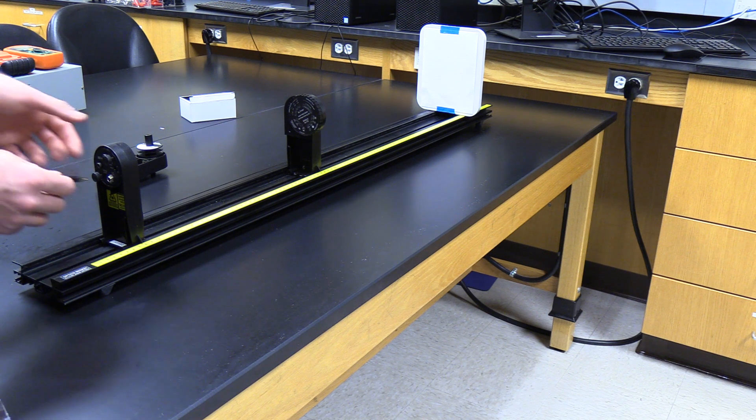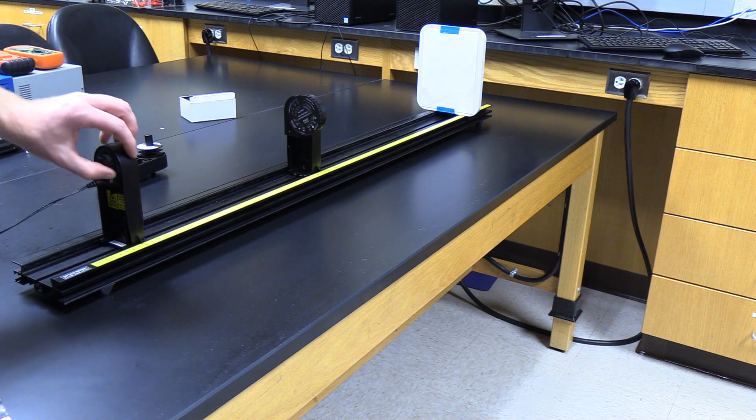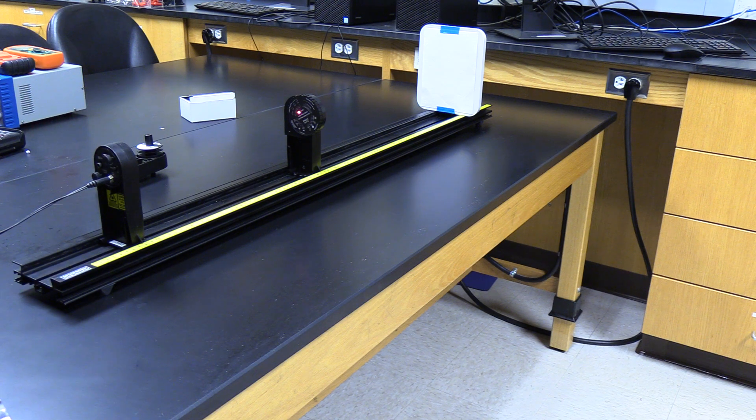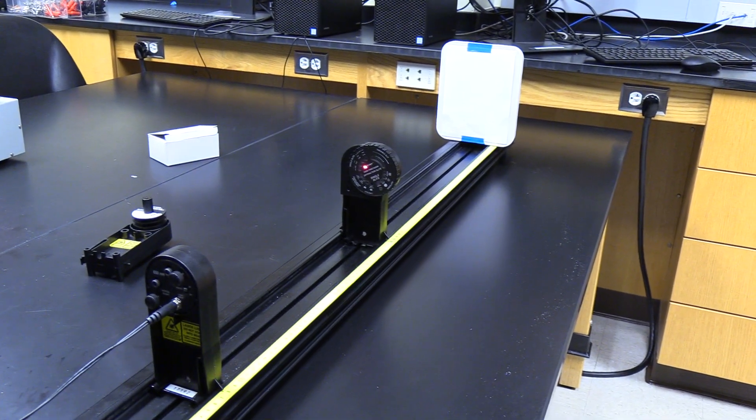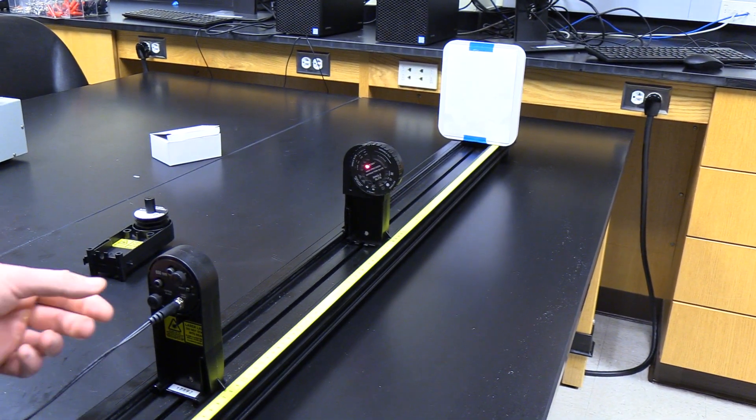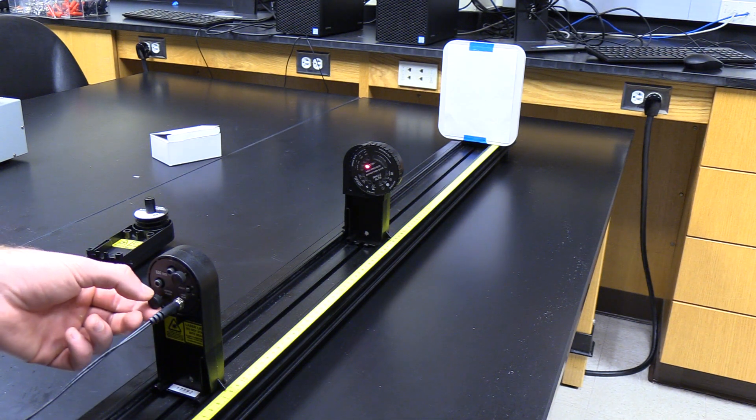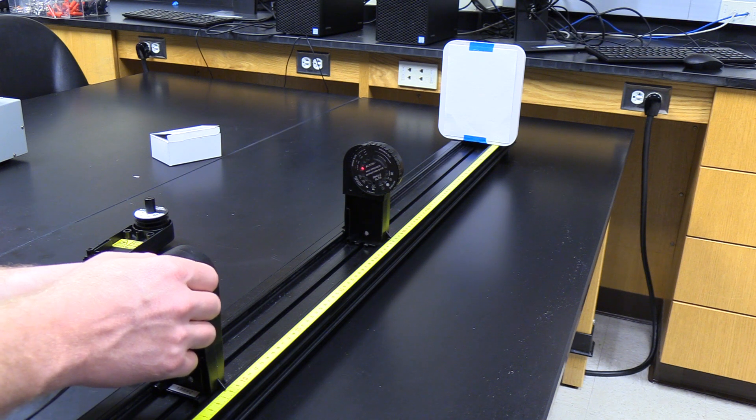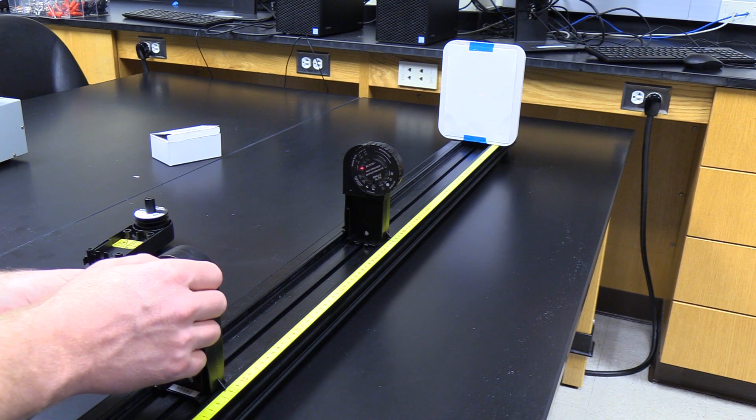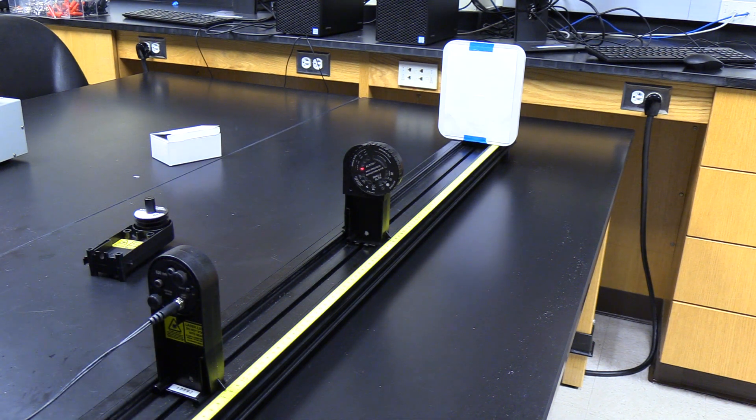I'm going to go ahead and plug in the laser and turn it on. I'll give you a better view here. It's not quite shining onto the slit, so I can use these thumb screws in the back to adjust where the laser is shining. I just want to move it over to the left and down. It looks like it's incident on the slit there. I'm going to turn the lights off and see what we see.